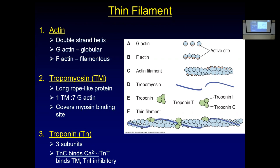An individual actin is called G-actin — they're little spheres. F-actin is a single strand of them put together. The actin filament contained in our sarcomeres is a double helix-looking structure where they're wound together and spiral. On every actin molecule is a binding site for myosin, so one myosin head can connect to one of those actin molecules.